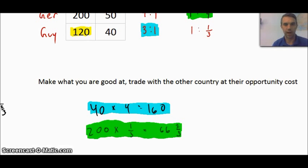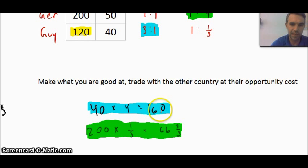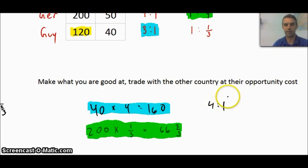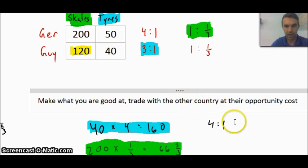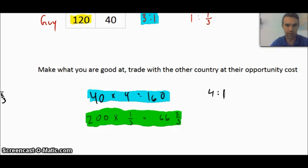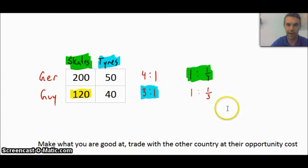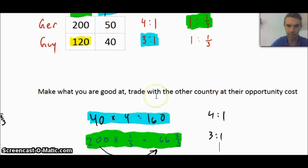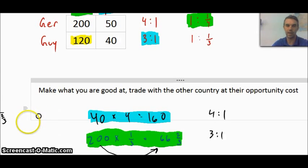Something I noticed while putting this together: Guyana got back to that 4 to 1 ratio, which was equivalent to the 4 to 1 ratio we saw for Germany. The correct answer would be 200 times one-third, which is 66 and two-thirds. That produces a 200 to 66⅔ ratio — the same 3 to 1 ratio that Guyana had earlier. Through trade, it all balances out.